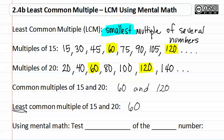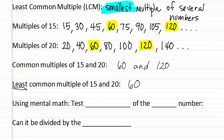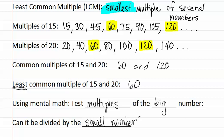Now we are going to learn how to do this using mental math, as writing out a list of multiples would be very time consuming. Using mental math, we are going to test multiples of the big number. Basically, we are going to be asking: can it be divided by the small number? In this way, we only have to find the multiples of one of the numbers instead of all of them.